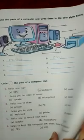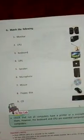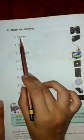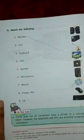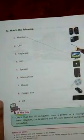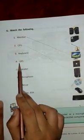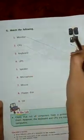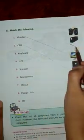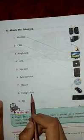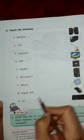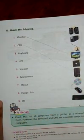Moving to page number 20, part G: match the columns — join each picture with the correct label. Monitor joins with monitor, CPU with CPU, keyboard with keyboard, UPS with UPS, speakers with speakers, microphone with microphone, mouse with mouse, floppy disk with floppy disk, and CD with CD. This is how you solve the exercise.